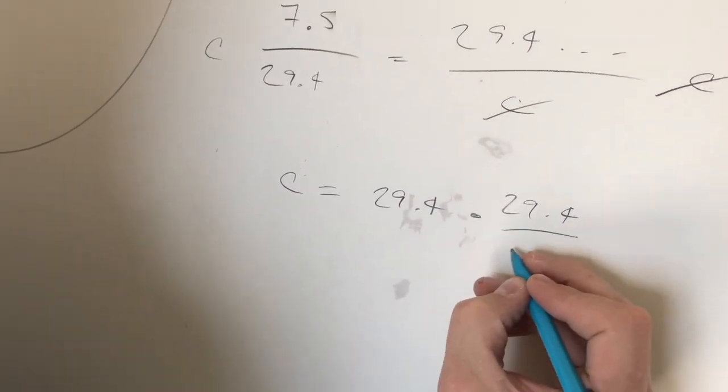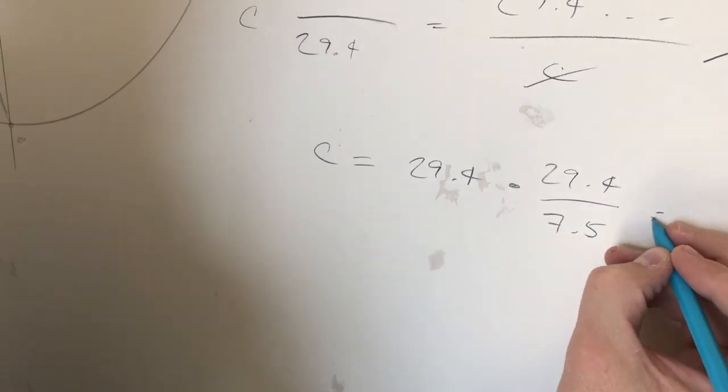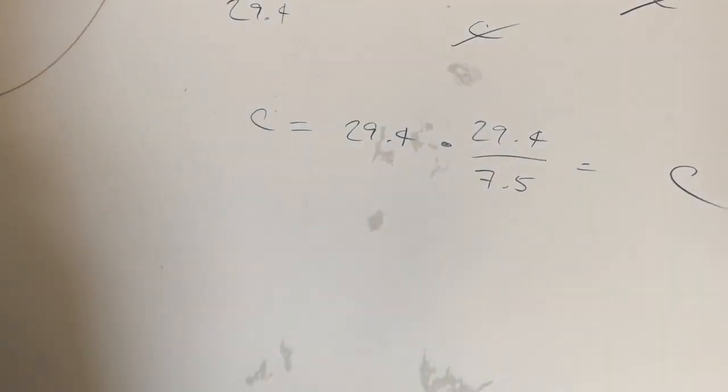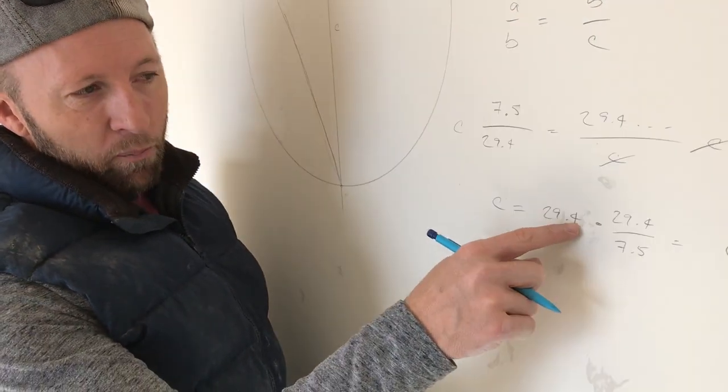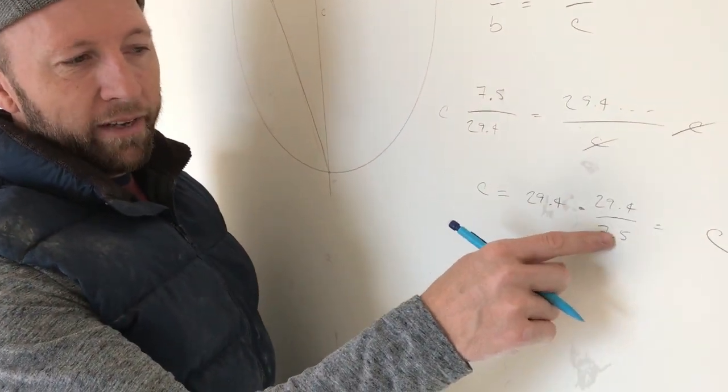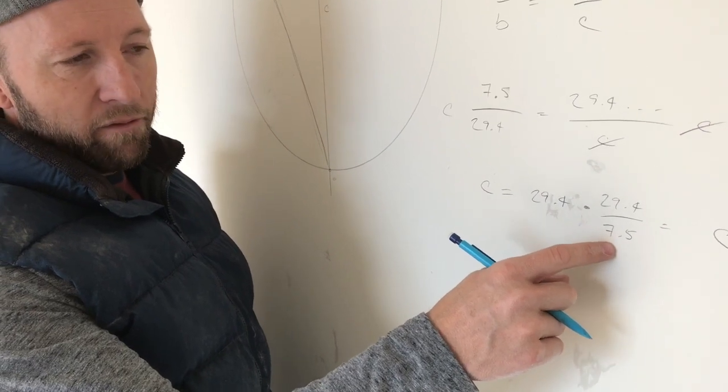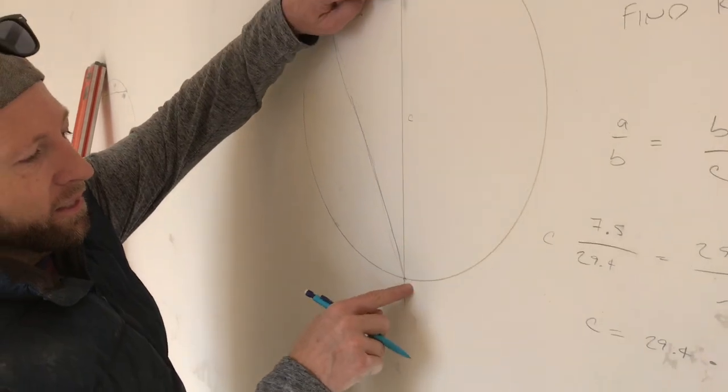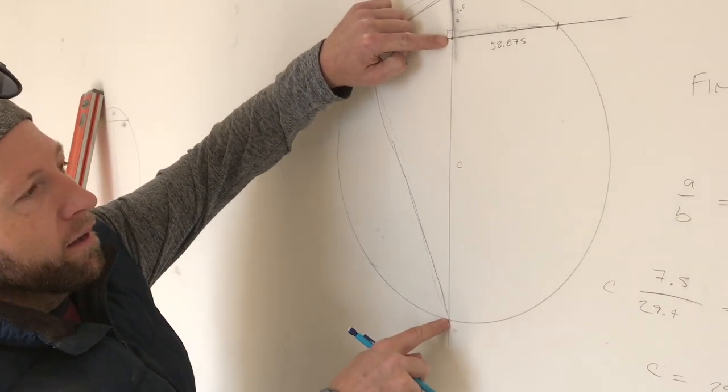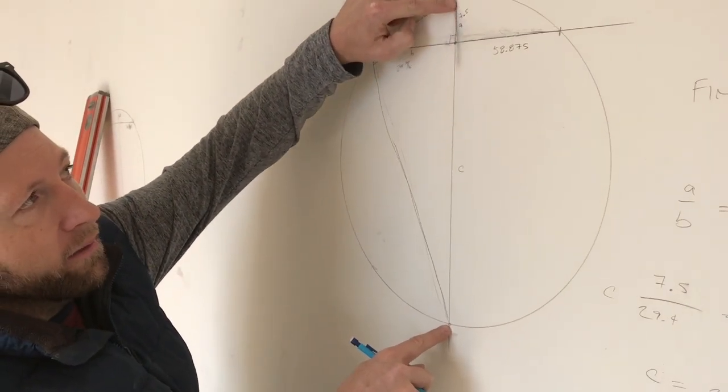And that will give us c. Once you get c, you multiply 29.4 times 29.4 and then you'll divide that by 7.5.